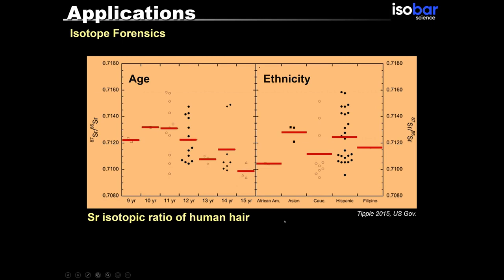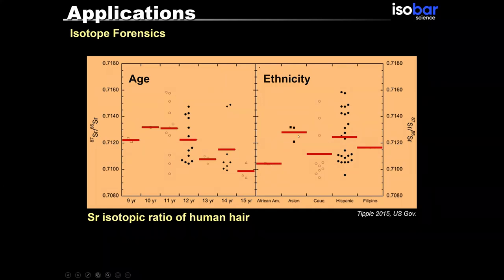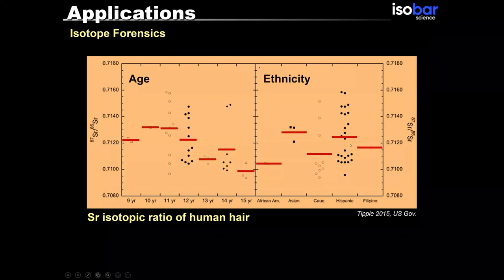These are the averages — the red lines show the average of the values. As you can see on the ethnicity graph, African Americans are showing a distinct signature, and you can separate them from the Asians or from the Filipinos. This is a very nice and interesting study.